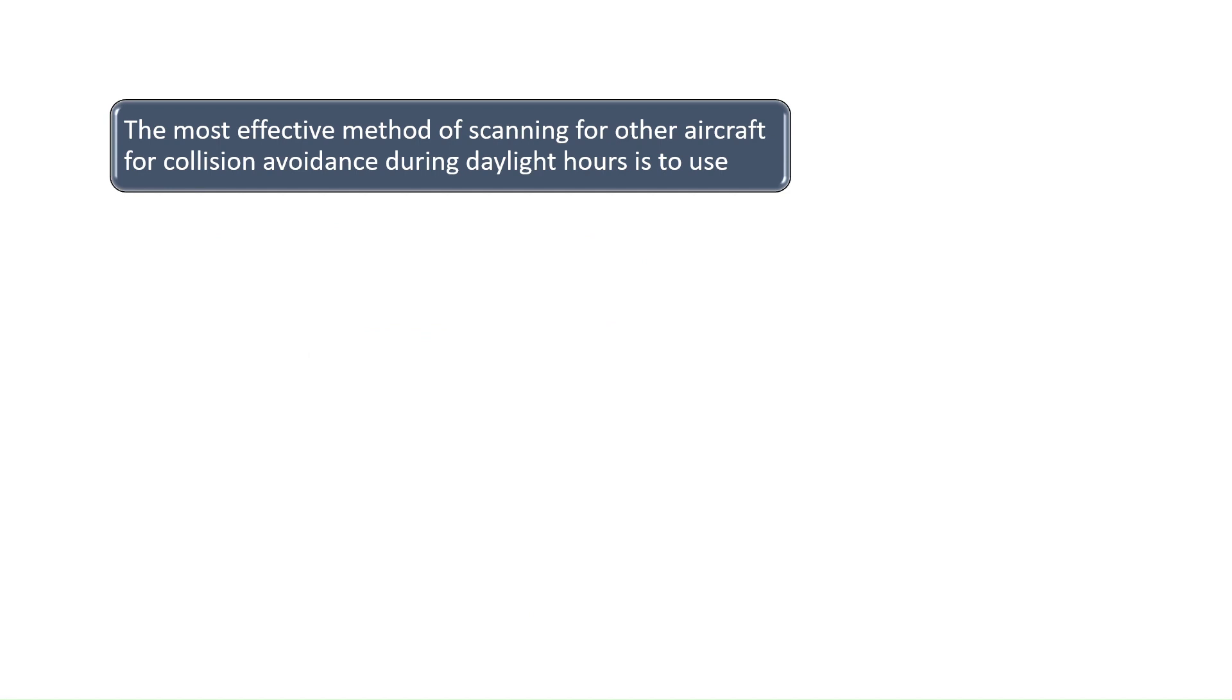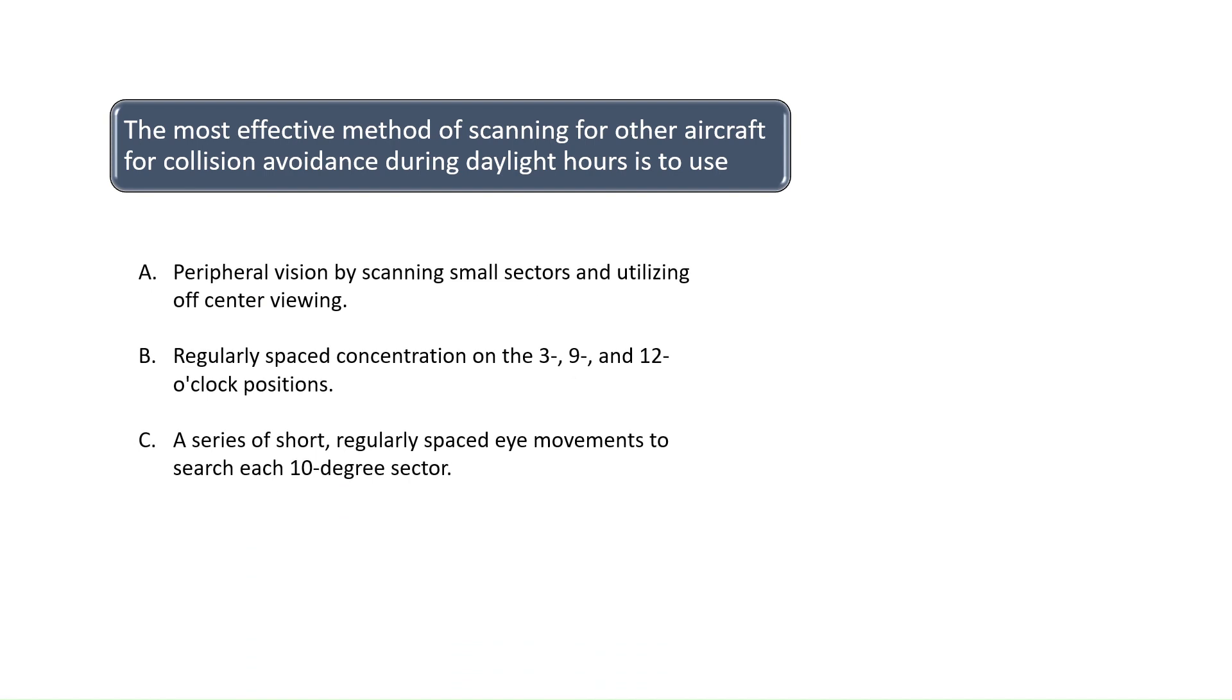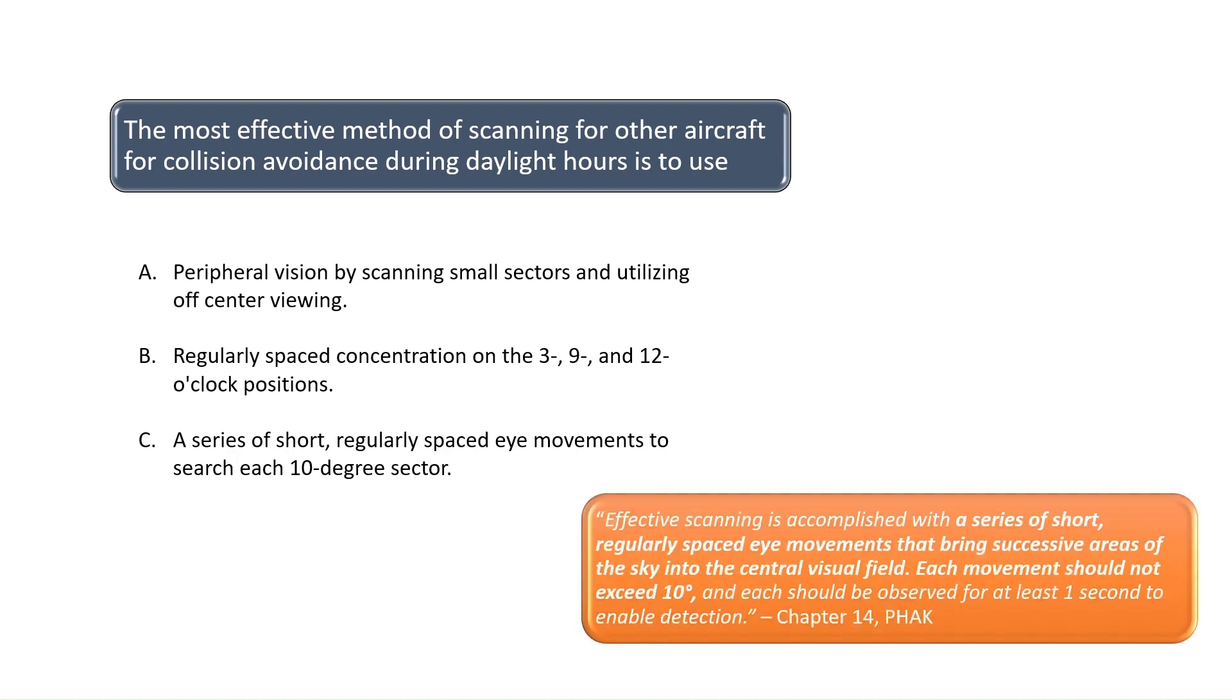The most effective method of scanning for other aircraft for collision avoidance during daylight hours is to use. See Chapter 14 of the Pilot's Handbook of Aeronautical Knowledge for more information on collision avoidance and the proper scanning techniques. When scanning for other air traffic, pilots should use a series of short, regularly spaced eye movements to search each 10-degree sector of the sky. The correct answer is C.